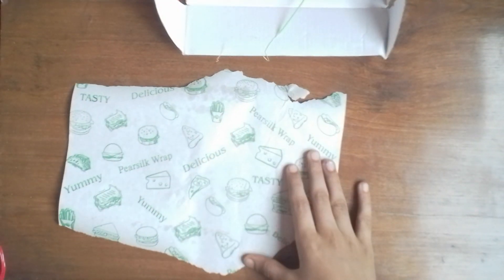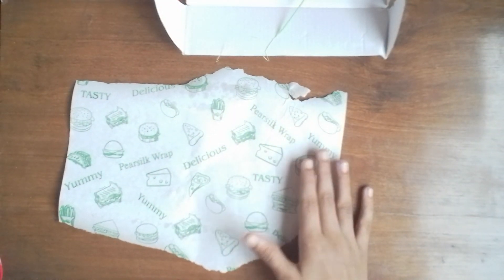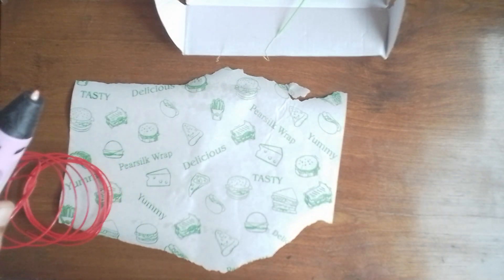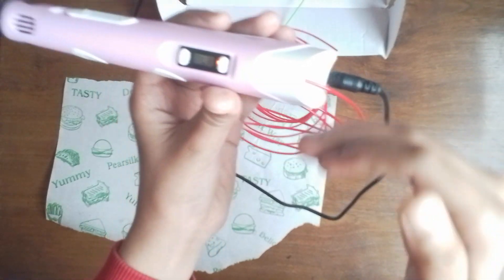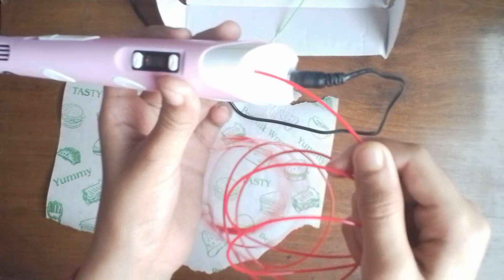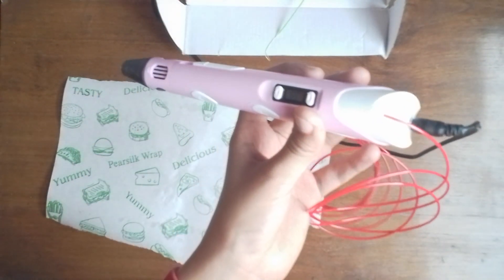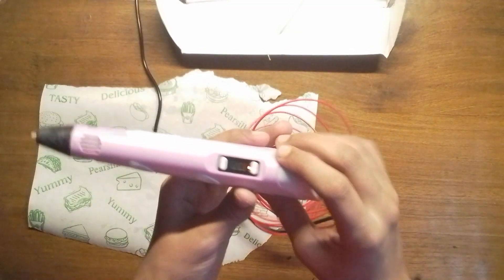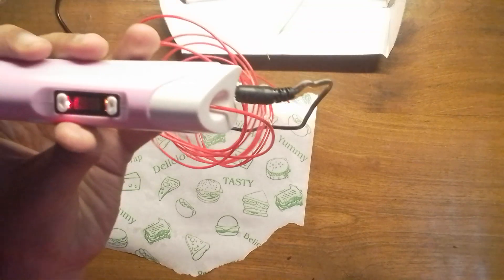What I have here is butter paper so that whatever I make with this 3D pen doesn't stick. First, we're going to heat it up so that when we insert the filament, it gets heated and we can make anything we want. We're going to heat it to 190.